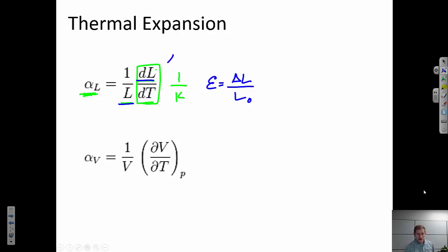So another way to rearrange this expression would be to say alpha dT equals some thermal strain. If the linear coefficient of thermal expansion is relatively constant over some temperature range, then I could replace dT with a macroscopic change in temperature, temperature difference. So alpha delta T equals thermal strain.